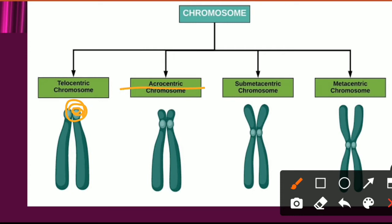The second type is the acrocentric chromosome. In this, the centromere is sub-terminal, and the chromosome appears rod-like having one short arm and one long arm. So the main character of acrocentric is: one arm is short and one arm is long.